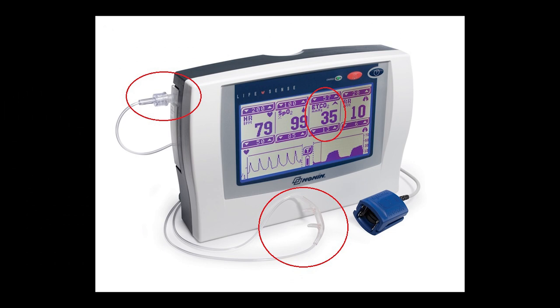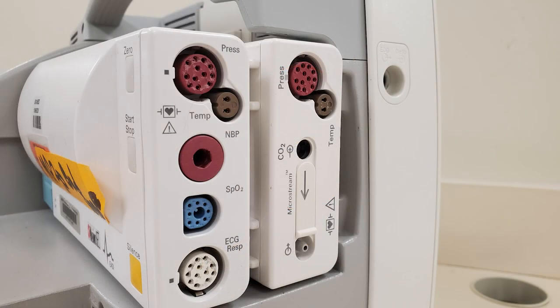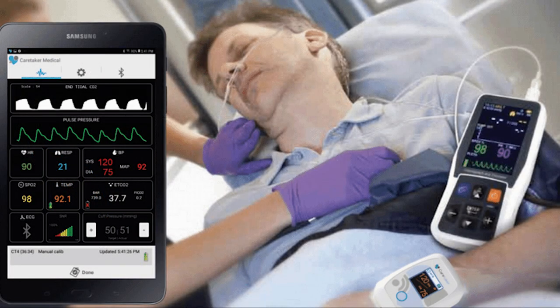Sidestream sensors are located at the monitor itself and use a small hose to take a sample of the gas exhaled by the patient. There's a small delay in the data as the gas travels through the line, but the sensor is protected from damage because it's located in the monitor itself. These EtCO2 monitors are found in step-down care units, post-anesthesia care units (PACUs), and general patient rooms. All types of EtCO2 monitors show quick changes in a patient's physiology, so end-tidal monitoring is becoming a patient care standard.